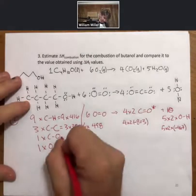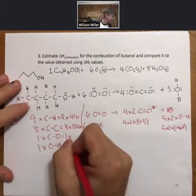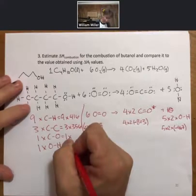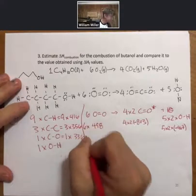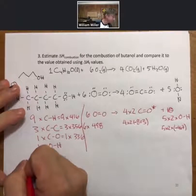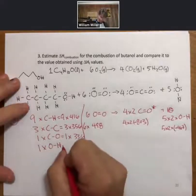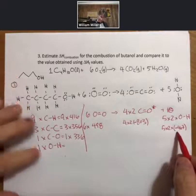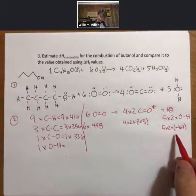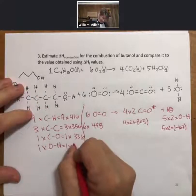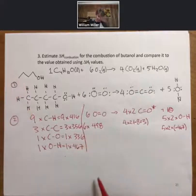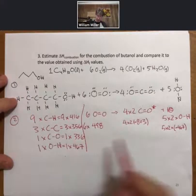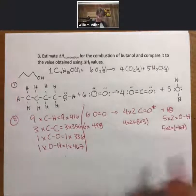They're estimates. And these estimates vary depending upon the source, but they're all very close. And they're all improving over time, as you might imagine. One times carbon-oxygen, 336. Yep, that's what it says. And one times oxygen-hydrogen is going to be 467.